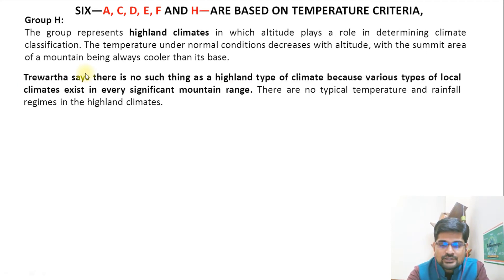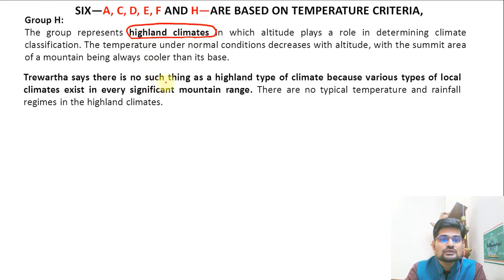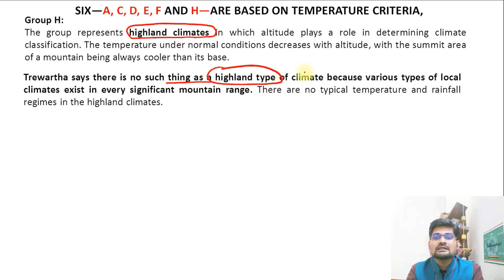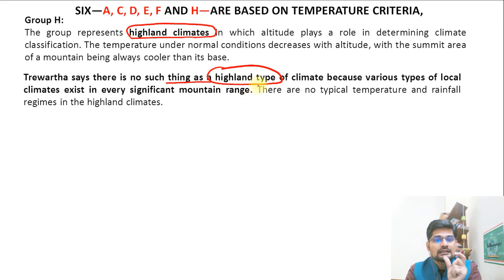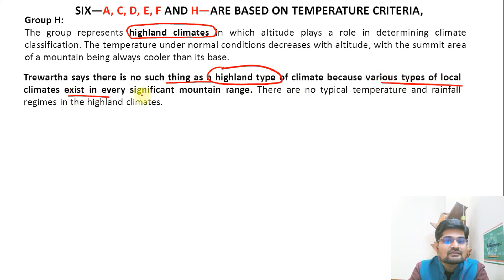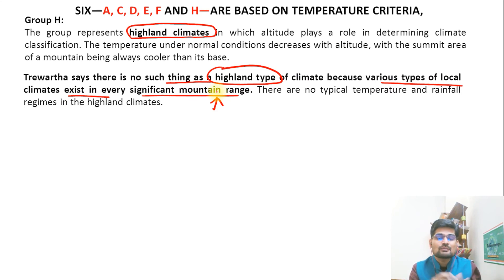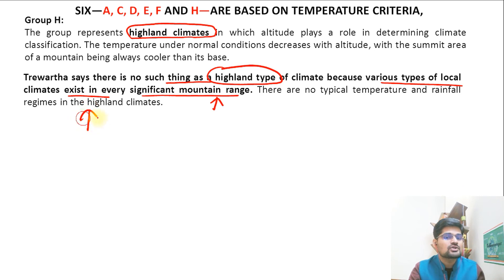Group H is the highland climate type. Trewartha says there is no such thing as a single highland type, because various types of local climate exist in every significant mountain range — some highlands have ice caps, some do not, so they vary considerably. He did not elaborate much on this and simply retained it as group H, based on the earlier classification.